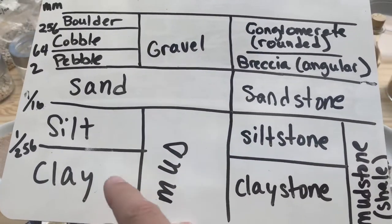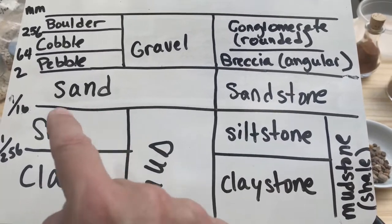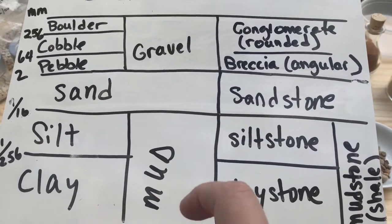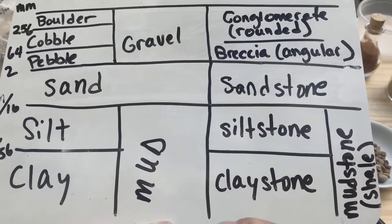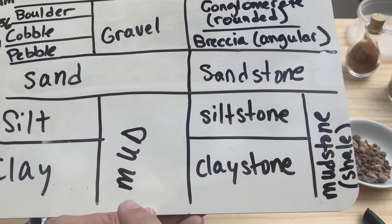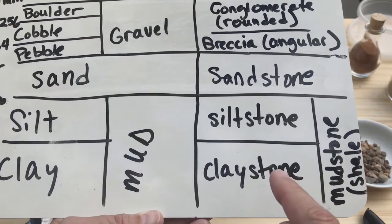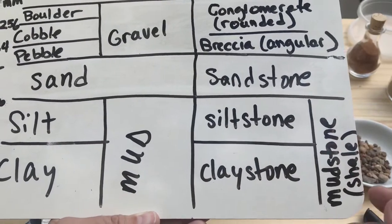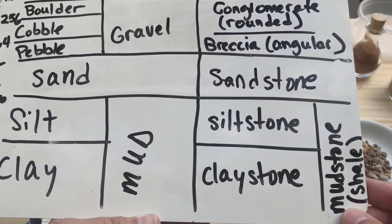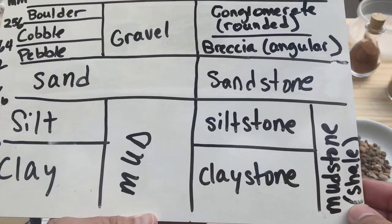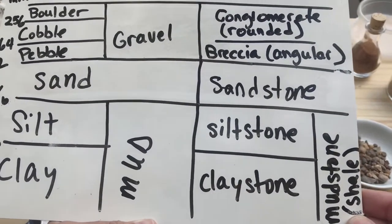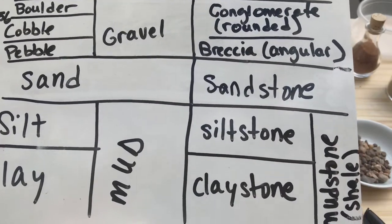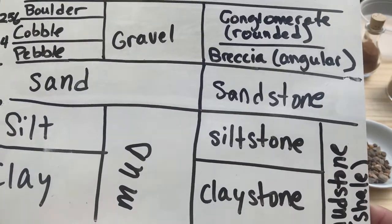We don't always have pure clay or pure silt — a mixture of silt and clay is called mud, like what you might get on your shoes. The rock equivalent is a mudstone. If it does not break into thin sheets we call it a mudstone, but if it does break into thin sheets we call it shale. Shale is a specific kind of mudstone that breaks into thin sheets.